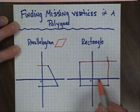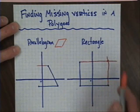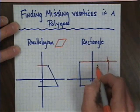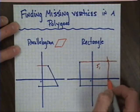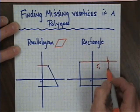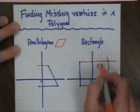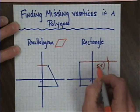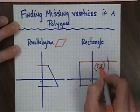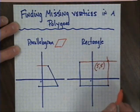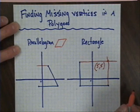In this case, that's five across and five up. That was convenient, so the newest point that completes that shape is (5, 5).